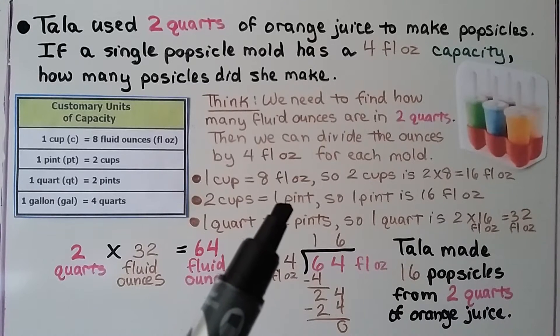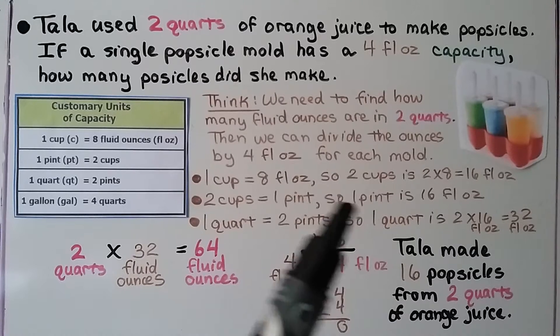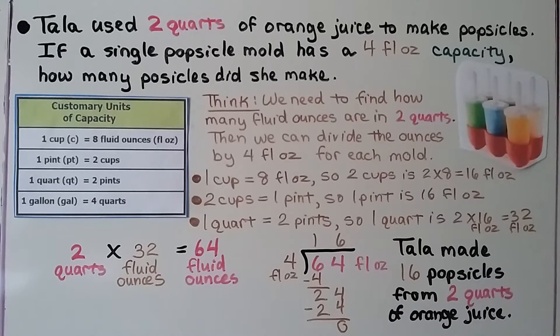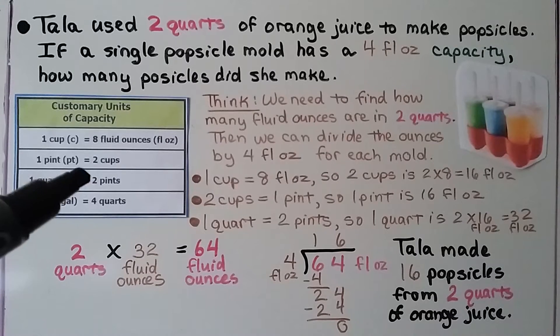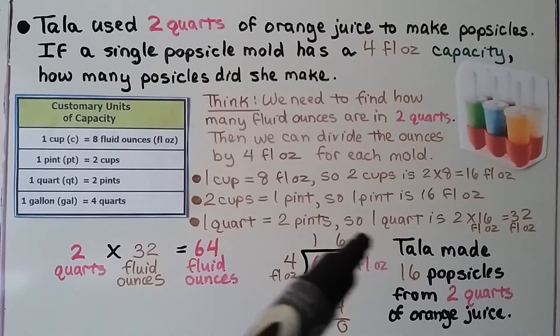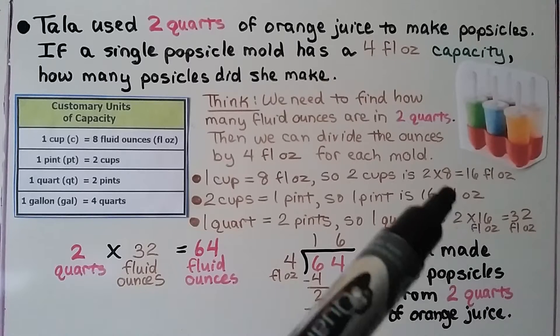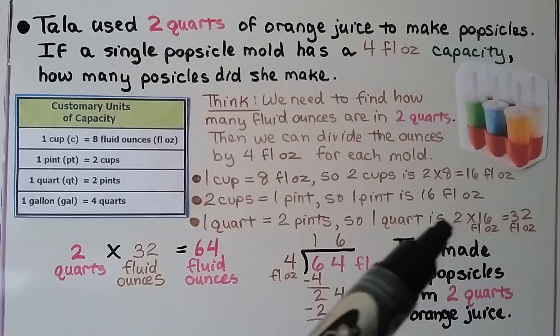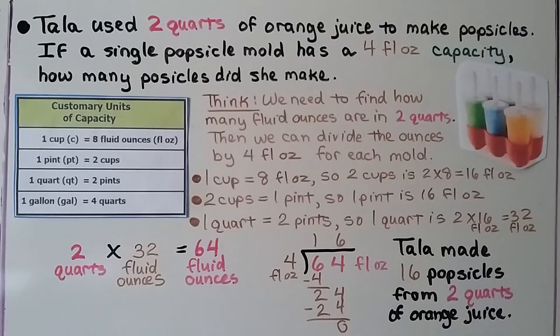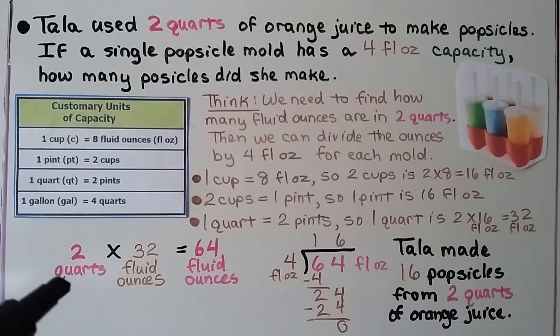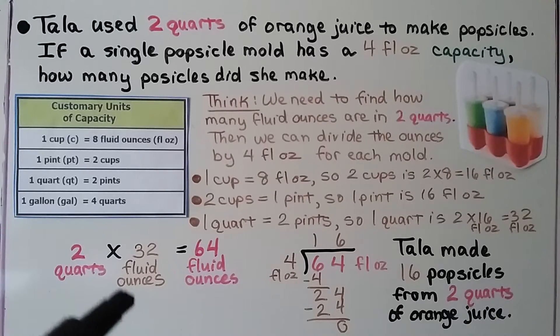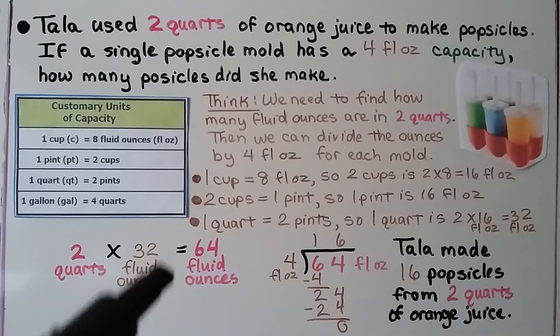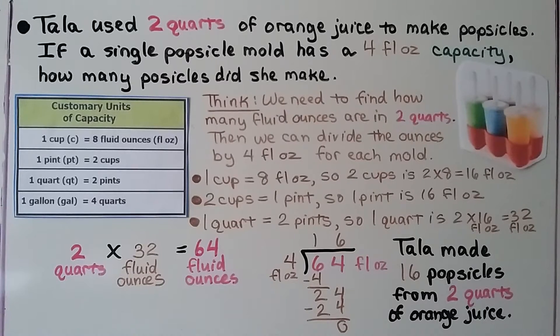And two cups is equal to one pint. And since two cups is 16 fluid ounces, that means one pint is 16 fluid ounces. Now one quart is two pints. So one quart is two times 16 fluid ounces. If one pint is 16, then two would be two times 16. That would be 32 fluid ounces for one quart. She used two quarts. So we do two quarts times that 32 fluid ounces in one quart. That's 64 fluid ounces she used.